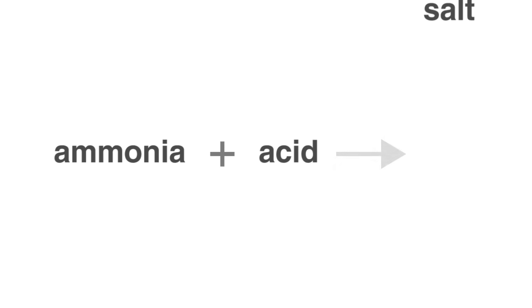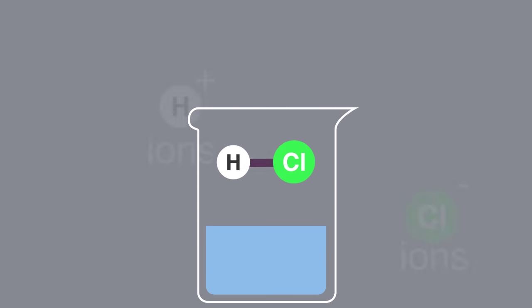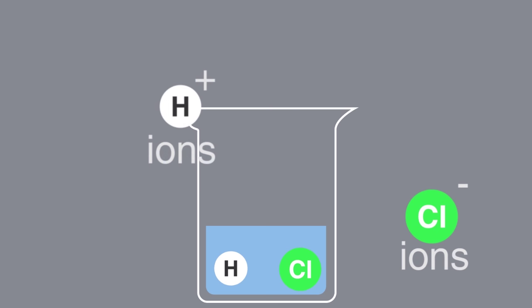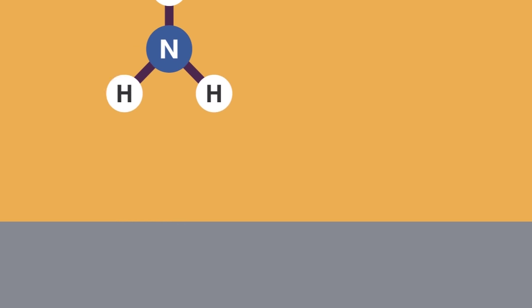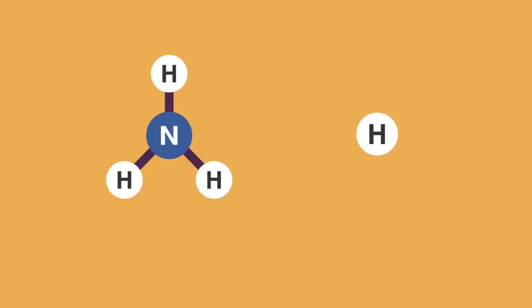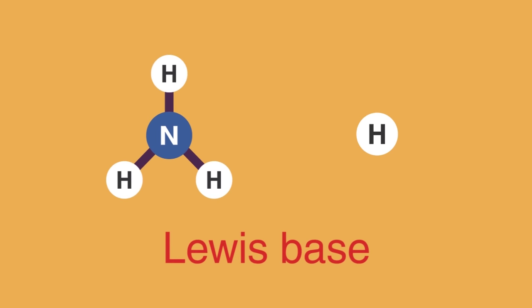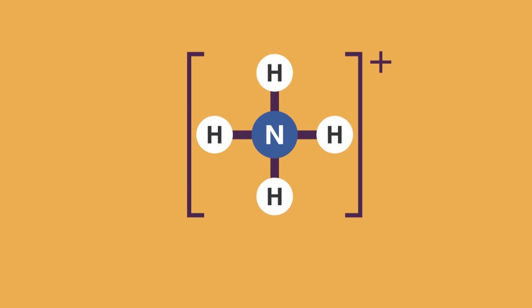If you worked out that we react ammonia with an acid to produce the salt, you're absolutely right. Let's look at the reaction with the common acid hydrochloric acid. Being a strong acid, this dissociates in solution to form H⁺ and Cl⁻ ions — and what's another name for the H⁺ ion? That's right: a proton. The ammonia molecule can accept a proton — that's what makes it a Lewis base.